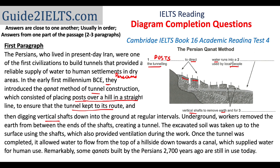Looking at the second question: water runs into a blank used by local people. So water runs into something and that something is used by local people. I keep two words in mind — water and local people. Water is mentioned a little later in the same paragraph. The sentence reads: once the tunnel was completed, it allowed water to flow from the top of a hillside down towards a canal, which supplied water for human use. Local people are not directly mentioned, but 'for human use' means for the use of people living there. So the water is running from the hillside to a canal — the answer is 'canal.'